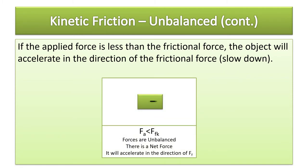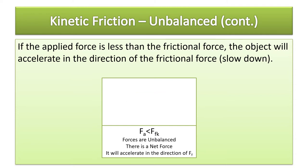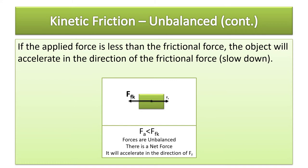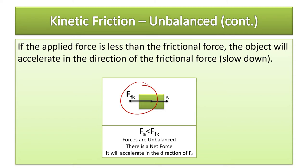The applied force is going to be less than the frictional force this time. The forces are unbalanced — there is a net force — and it's going to accelerate in the direction of the frictional force. This is assuming you're already moving to the right, because the frictional force opposes that motion. But then you slow down. So you could still have an applied force and slow down if the frictional force is greater.